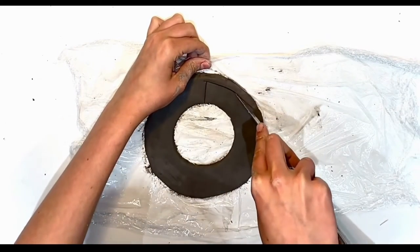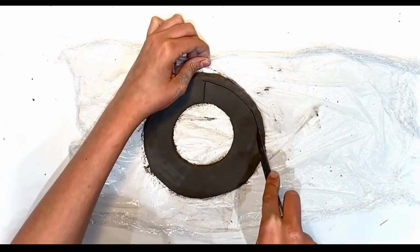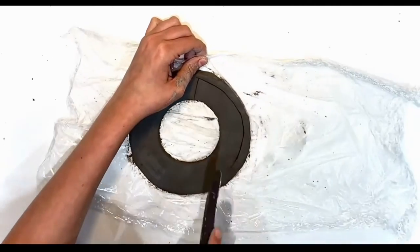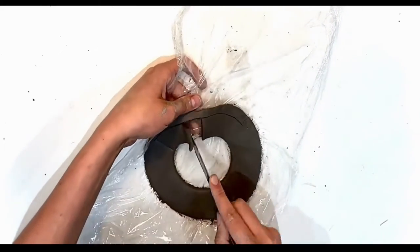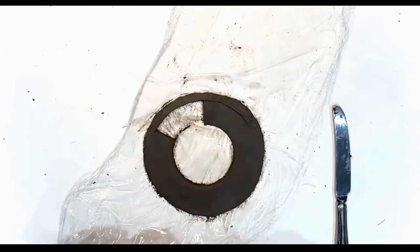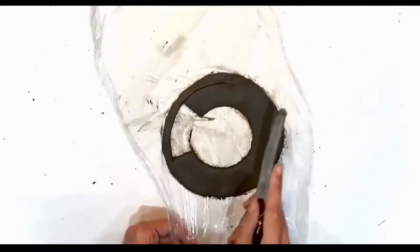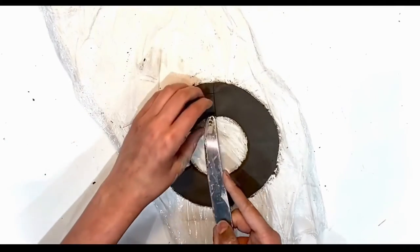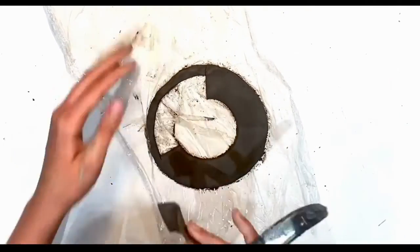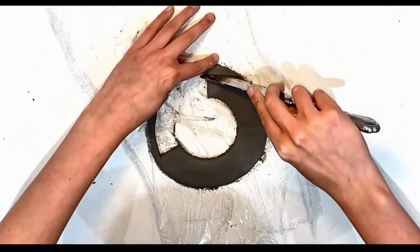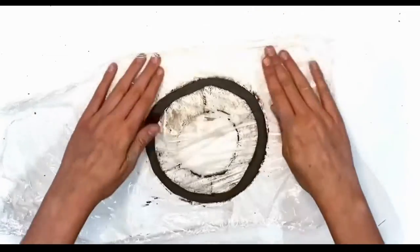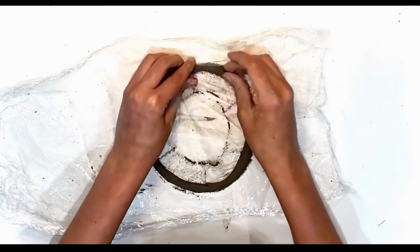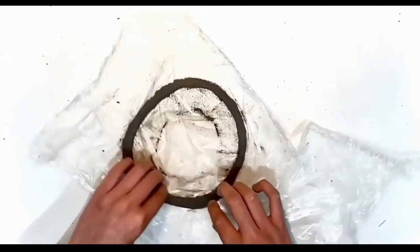With this donut shape that you have, you want it to be a narrower circle, so start to cut away the clay in sections as it will be easier to do. Keep doing this until you have a ring like this, and then neaten it up by pinching it together with your fingers.